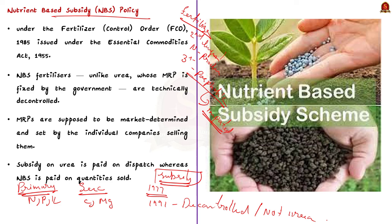For non-urea-based fertilizers, prices are fixed by companies, but farmers are not burdened because they are regulated under the Nutrient-Based Subsidy (NBS) scheme. The NBS scheme has been implemented since 2010 by the Department of Fertilizers under the Ministry of Chemicals and Fertilizers. Under the scheme, fertilizers are given at a subsidized rate based on contained nutrients — nitrogen, phosphate, potash, and sulfur. Note that it does not include urea-based fertilizer. Fertilizers fortified with secondary and micronutrients such as molybdenum and zinc are given additional subsidy.